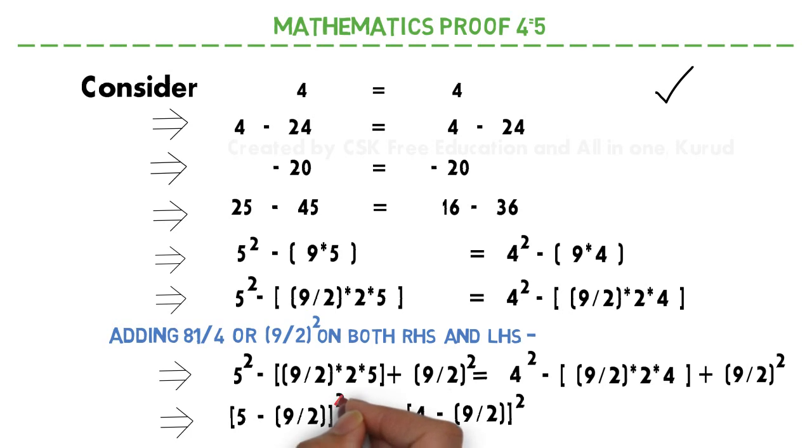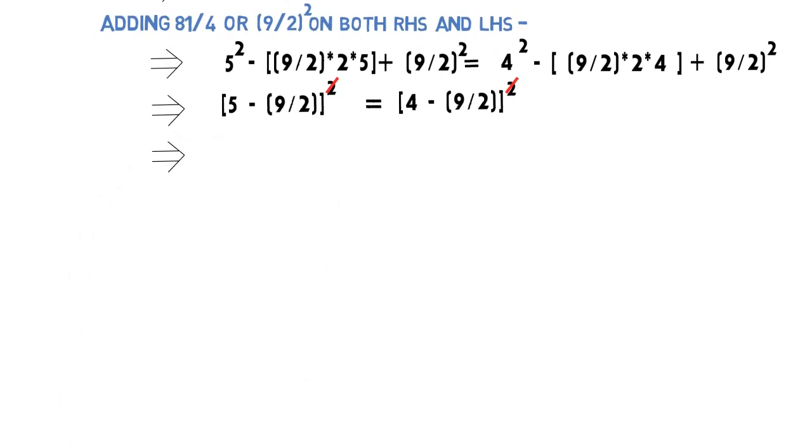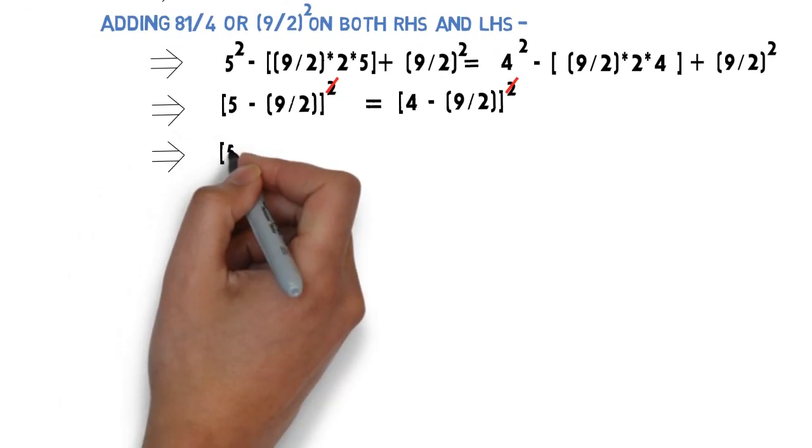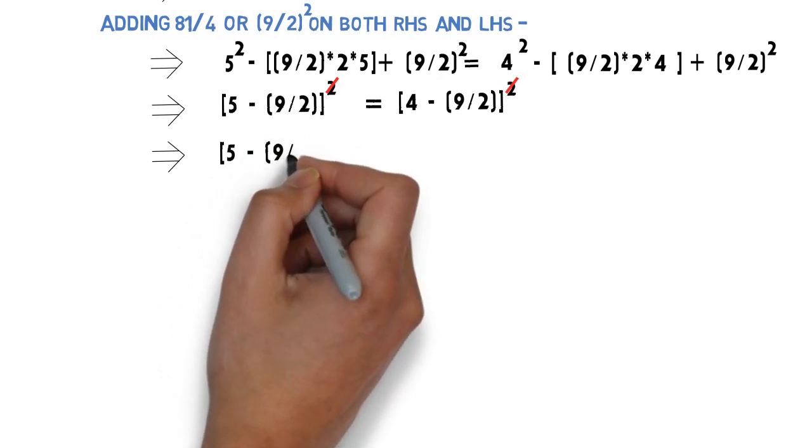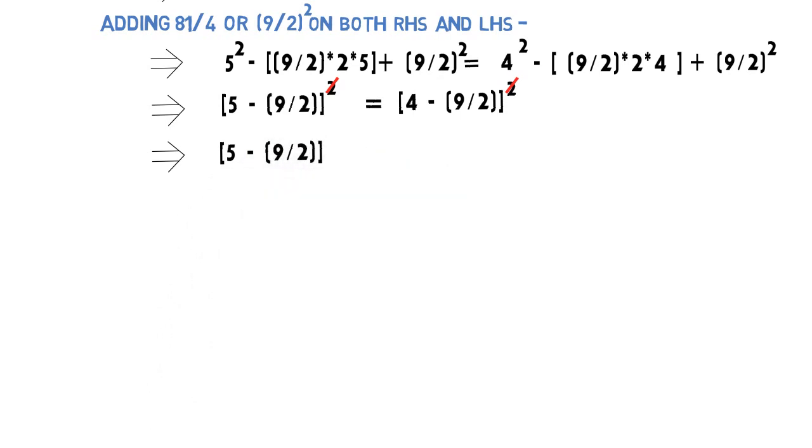Since I have got squares on both the sides of the element, we can take the square root and we can cancel the squares as well. Now I will be getting 5 minus 9 by 2 is equal to 4 minus 9 by 2.